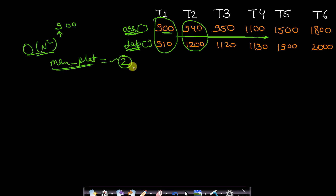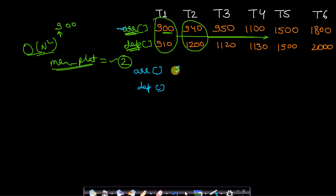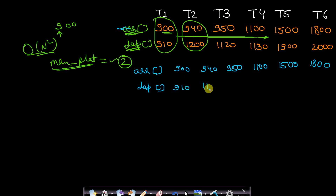There is a more efficient approach: sort both the arrival time and departure time arrays in ascending order. The arrival array is already sorted — 900, 940, 950, 1100. The departure array sorted becomes: 910, 1120, 1130, 12, 19, and 20.